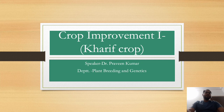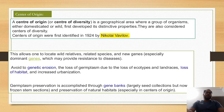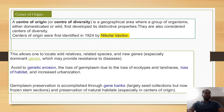Before that we will start with the center of origin for different crops. Center of origin means a geographical area where a group of organisms, after the domestication of wild species, are first developed with distinct properties. It means a group of organisms originated in a specific area where they have the highest genetic diversity of that species. So it is called center of origin, or we can say it is a center of diversity, given by Nikolai Vavilov in 1924.